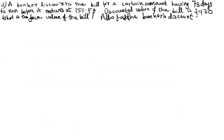See the next question. A banker discounts a bill for a certain amount having 73 days to run before it matures at 15% per annum. The discounted value of the bill is rupees 970. What is the face value of the bill? You need to calculate F, and also find the banker's discount BD.